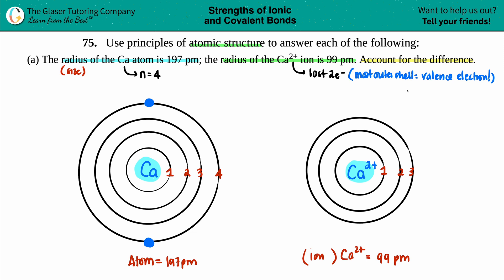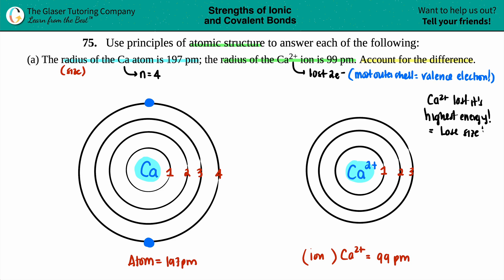Ca2+ lost its highest energy level, and when you lose your highest energy level, you lose size. And if you lose size, you lose radius. That is basically the answer to this question.